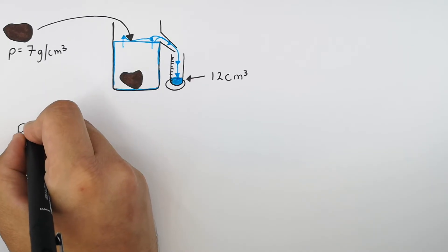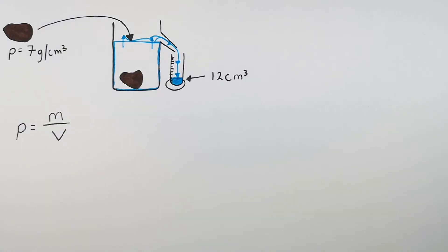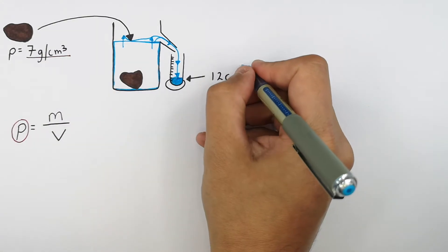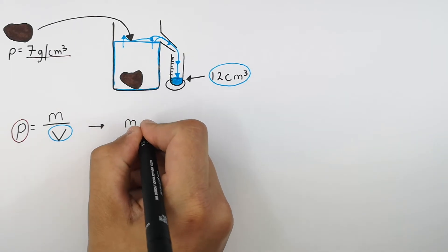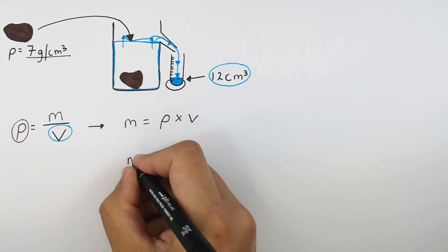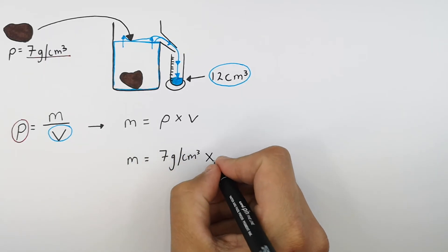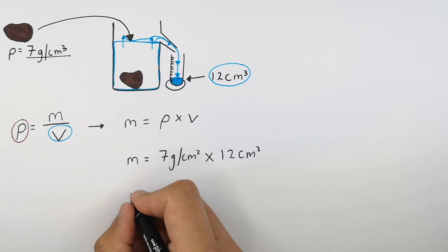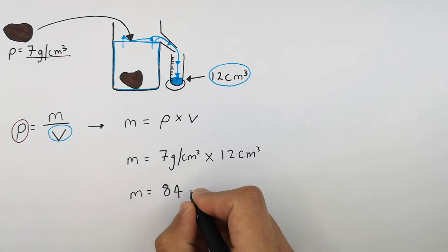To work out the mass of this object, recall the equation: density p equals mass m divided by volume v. We've got density p, which is 7 grams per centimetre cubed, and volume, which is 12 centimetres cubed. So we rearrange the equation for m: m equals p times v. Substituting in the numbers — mass equals 7 grams per centimetre cubed times 12 centimetres cubed — gives a mass of 84 grams.